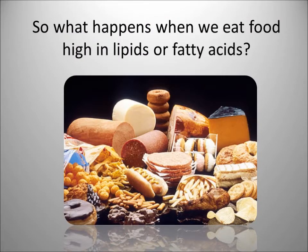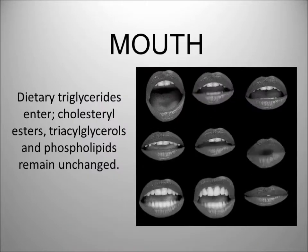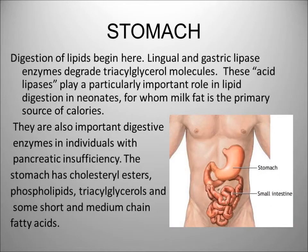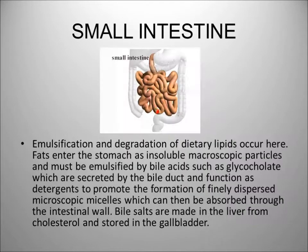So what happens when we eat food high in lipids or fatty acids? Dietary triglycerides enter the mouth. Cholesterol esters, triacylglycerols, and phospholipids remain unchanged in the mouth. Stomach digestion of lipids begins here — lingual and gastric lipase enzymes degrade triacylglycerol molecules. In the small intestines, emulsification and degradation of dietary lipids occur. Fat enters as insoluble microscopic particles and must be emulsified by bile acids such as glycocholate, secreted by the bile duct, which function as detergents to promote formation of finely dispersed microscopic micelles, which are then absorbed through the intestinal wall.